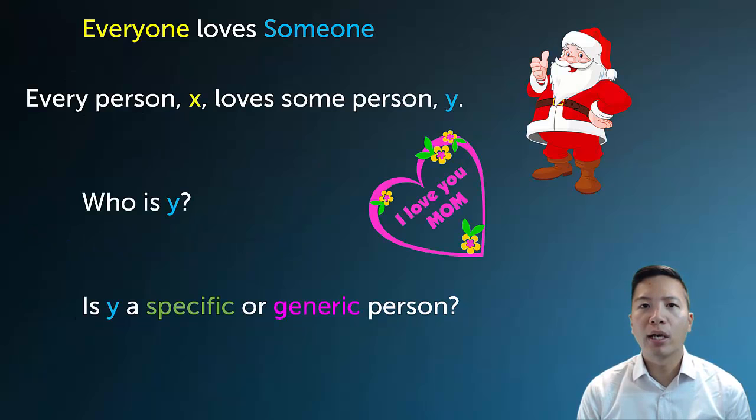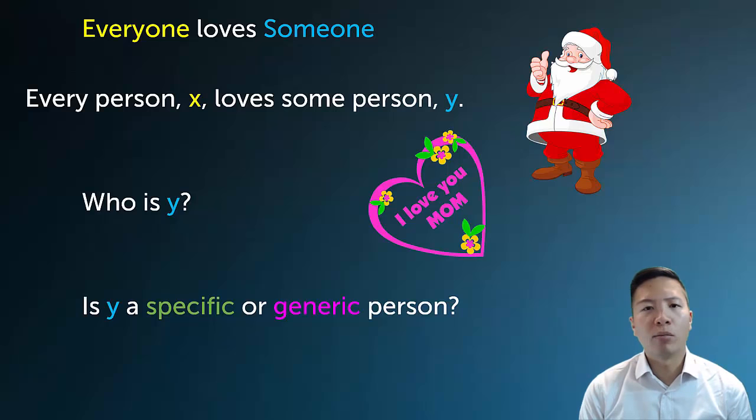Now, you might actually notice that what I said was somewhat ambiguous. Everyone loves someone can be interpreted in one of two different ways. The first way I could interpret it is to say that every person loves some random or generic person Y. So that would be like saying, well, everyone must love their mother. And so there, notice that everyone has a different mother, but that's okay, it's still captured by the meaning everyone loves someone.